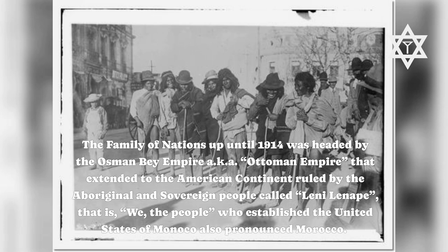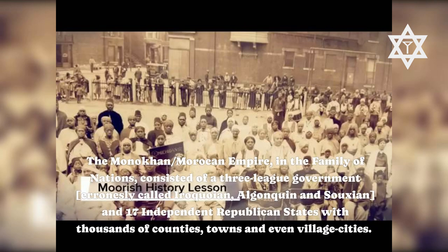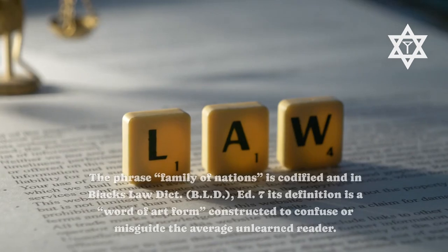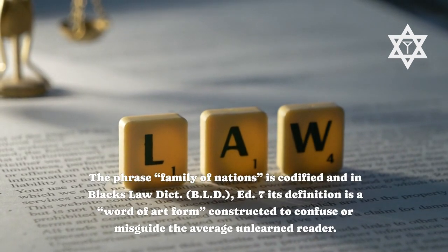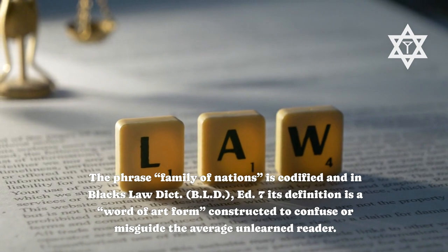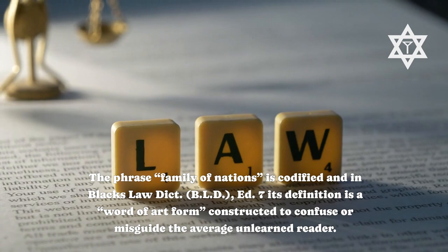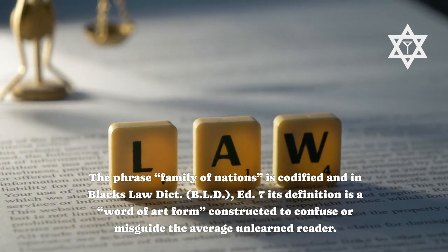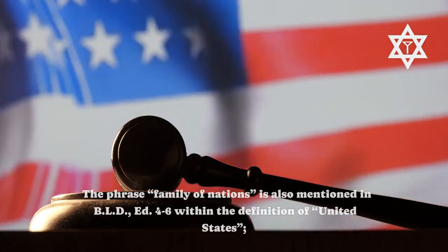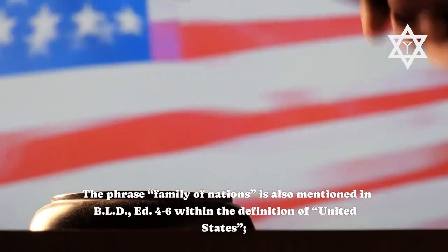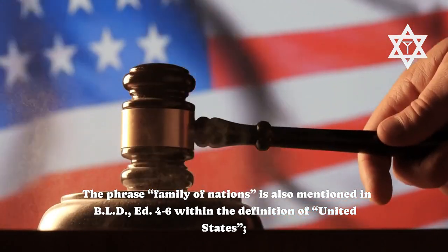The Moroccan/Monacan Empire in the family of nations consisted of a three-league government — only called Iroquoian, Algonquin, and Sushan — and 17 independent republican states with thousands of counties, towns, and village cities. The phrase 'family of nations' is codified in Black's Law Dictionary, BLD ed. 7. Its definition is a word of art formed to confuse or misguide the average unlearned reader.